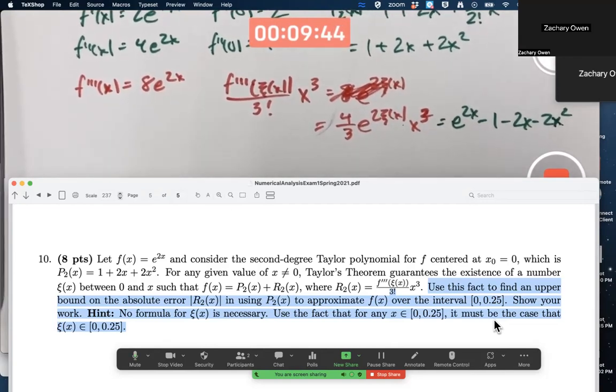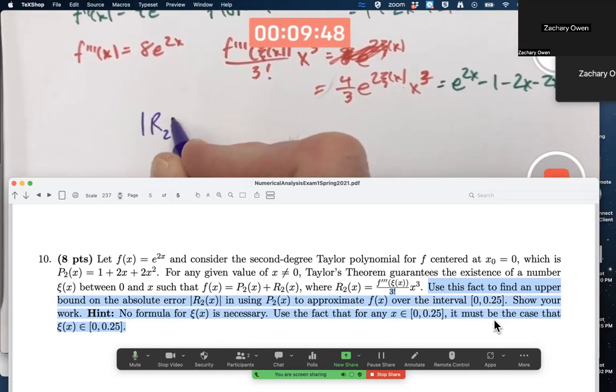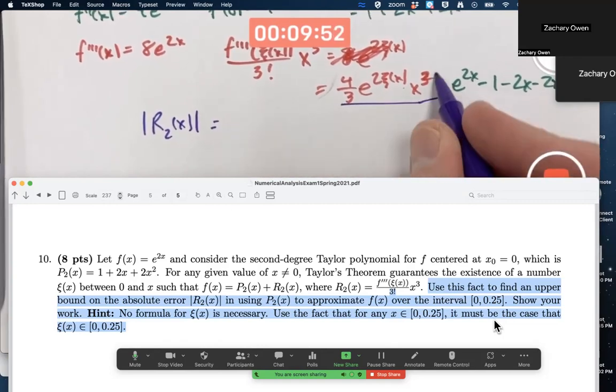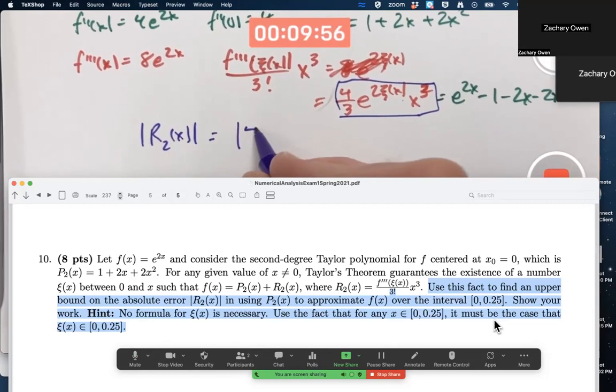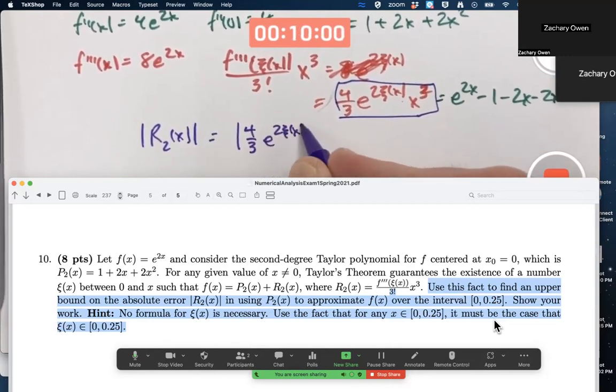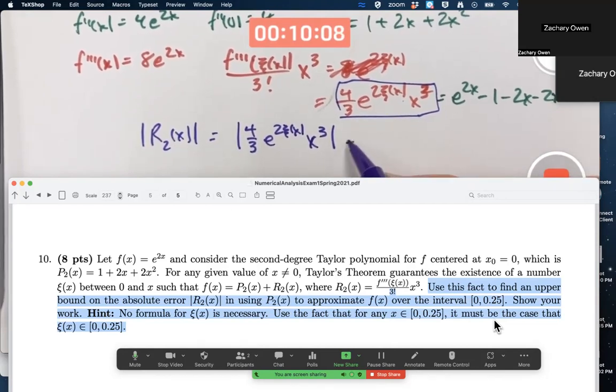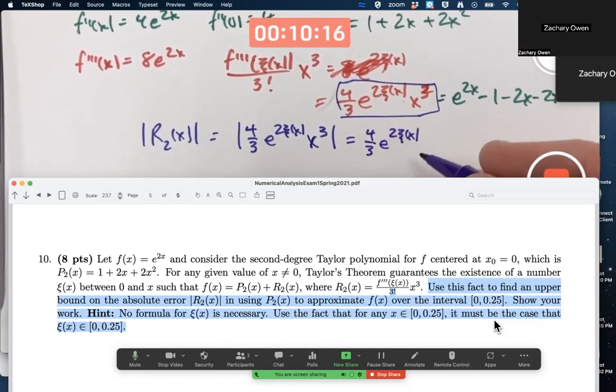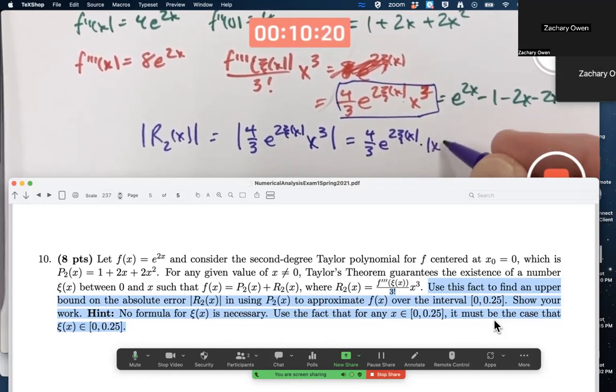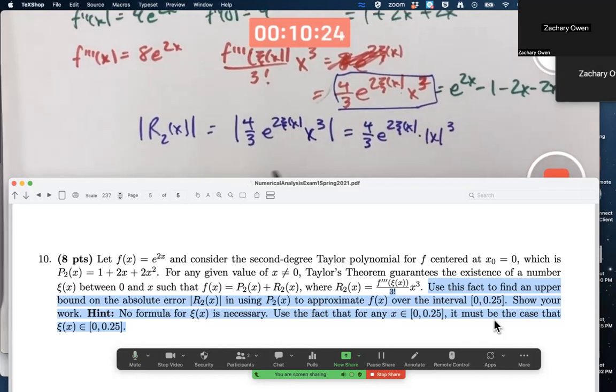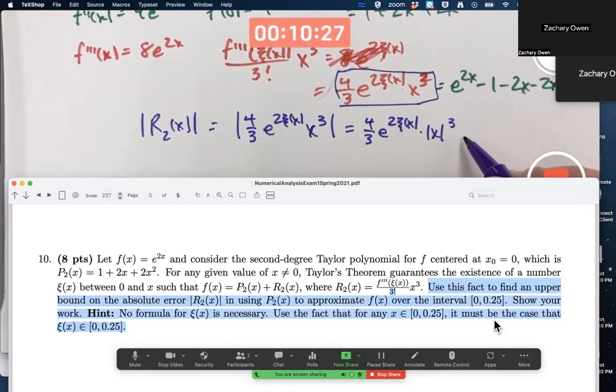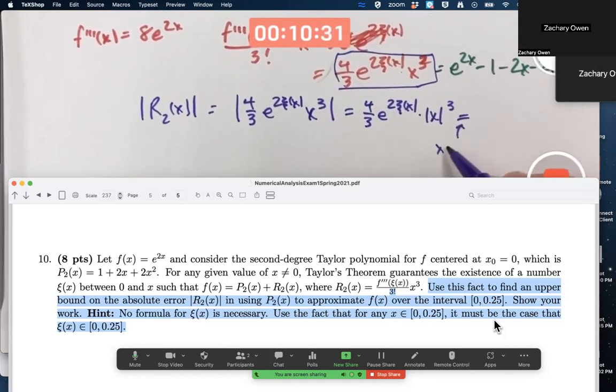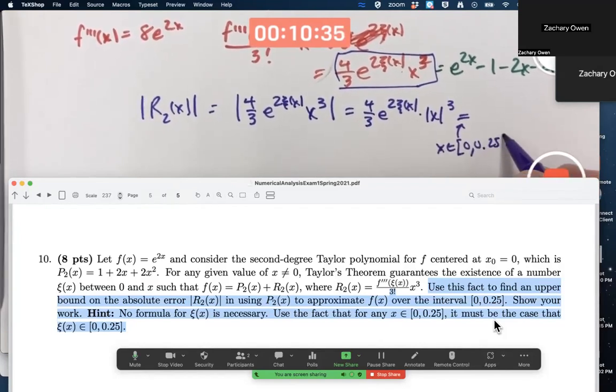So how do you do that here? The absolute value of r2 of x is going to be the absolute value of this expression right there. Absolute value of 4 thirds e to the 2 xi of x times x cubed. 4 thirds is positive, e to a power is positive. I can actually factor those out like this if I want to. x could be negative, and so therefore x cubed could be negative, but the absolute value of x cubed is the same as the absolute value of x quantity cubed. Though we are in the interval from 0 to 0.25, so since x is in the interval from 0 to 0.25, I actually can completely get rid of the absolute value signs. If x were negative, I could not do that.